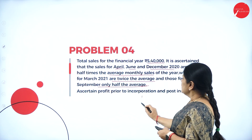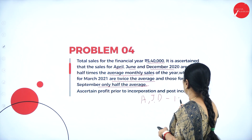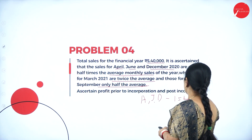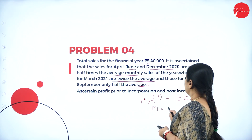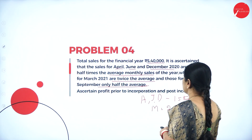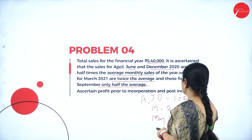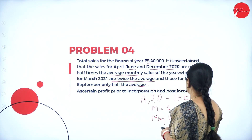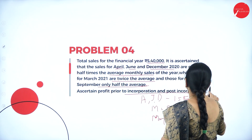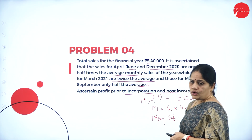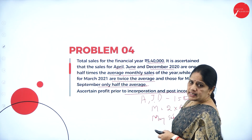Make a note here: for April, June, and December, sales are 1.5 times the average. For March, it is two times the average, and for May and September, it is only half the average. We are asked to ascertain profit prior to incorporation and post-incorporation.